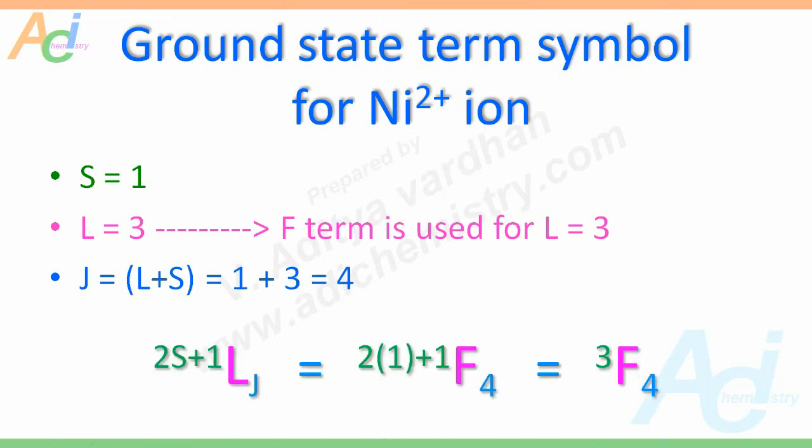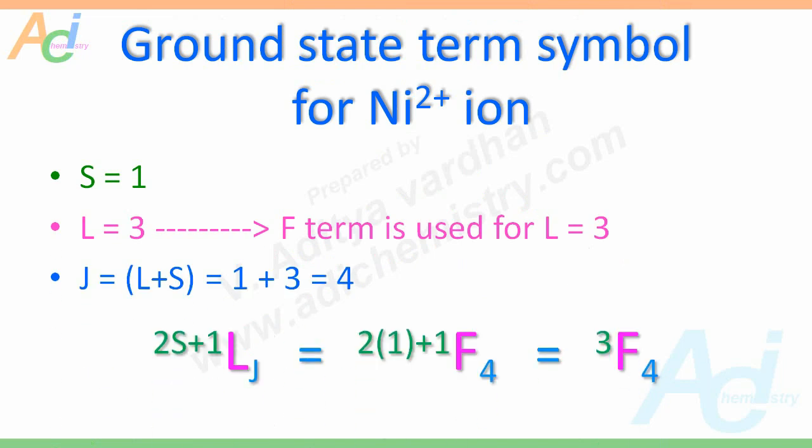Let us plug these values into the term symbol 2S+1LJ. Since S equals 1, 2S+1 equals 3. Since L equals 3, we write the term F, and J equals 4. So the ground state term symbol for Ni²⁺ ion is 3F₄, or triplet F four.